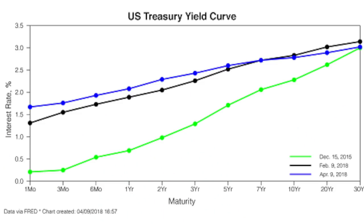The yield curve is a line that shows on the x-axis treasury maturities for the US — in this case from one month, three months, six months, one year to 30 years. The green line is the yield curve from 2015 where the yield for short-term maturities was 0.25% and going into 30 years was around 2.5–2.7%. Now two and a half years later we have short-term maturities yielding from 1-something to 2%.